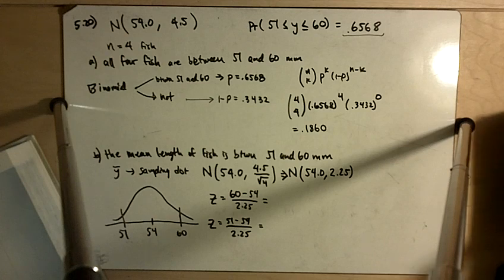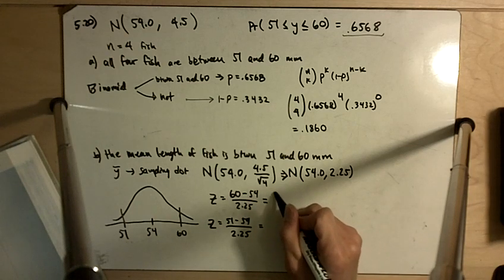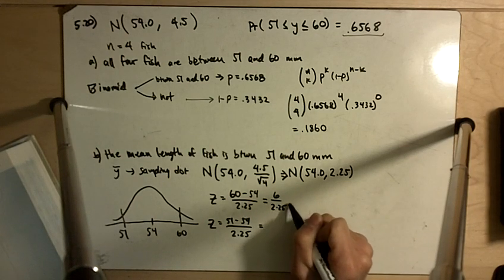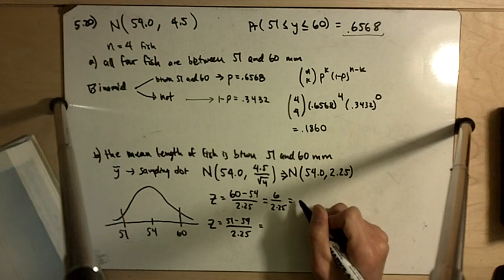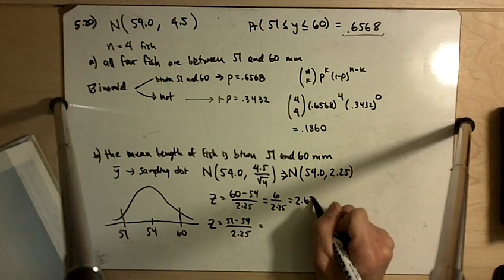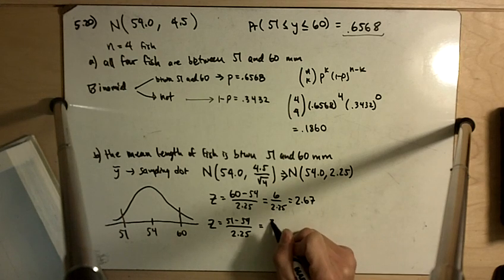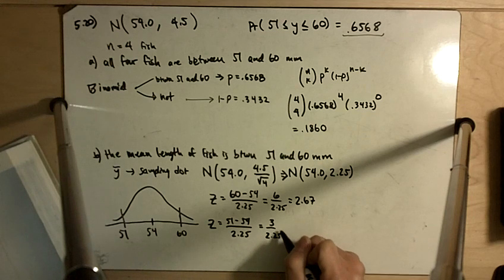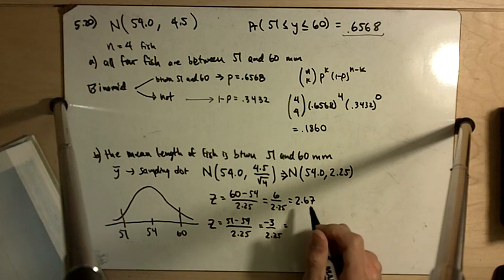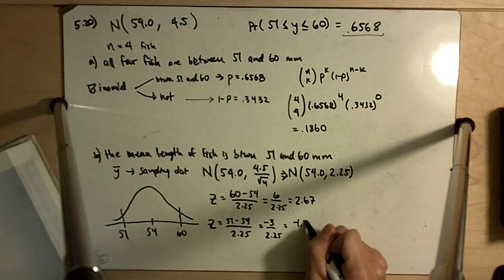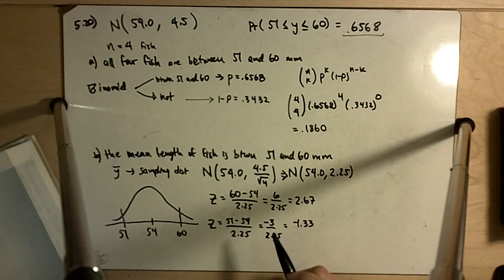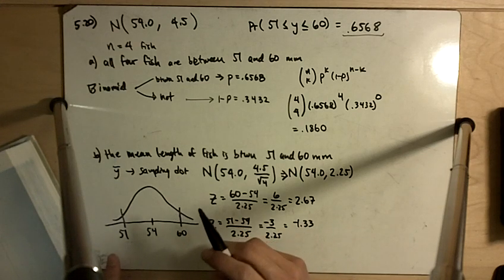Let me just show you what I'm doing here. 60 minus 54 is 6 divided by 2.25, and you get positive 2.67 when you do that. And over here, you get negative 3 divided by 2.25, and you get negative 1.33. So my picture is actually a little off. The 51 is closer to over here.